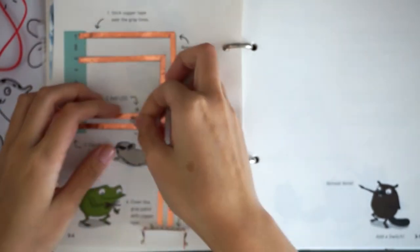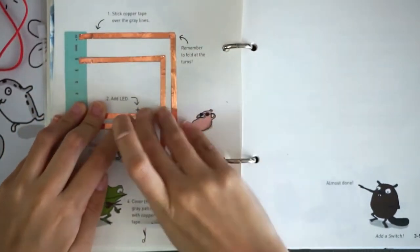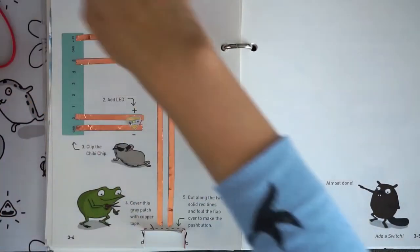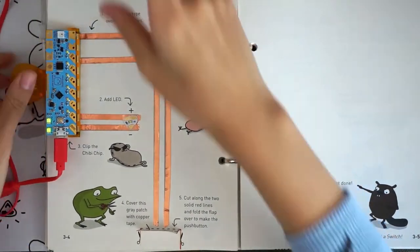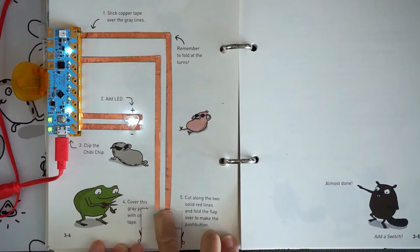Add a white LED, making sure you align the point of the LED to the point of the red outline on the page. Attach your Chibi chip to the edge of the page and press down on the switch. You should see the LED light up when the switch is pressed!